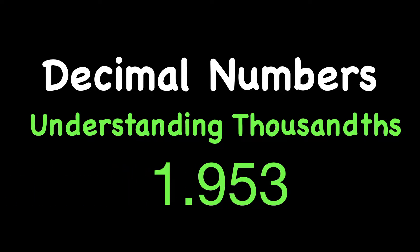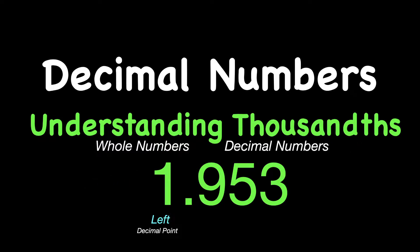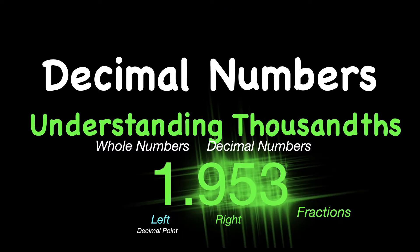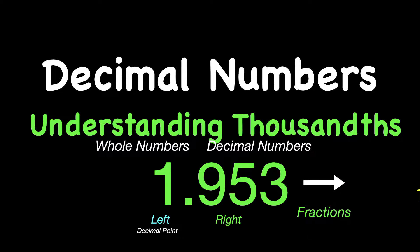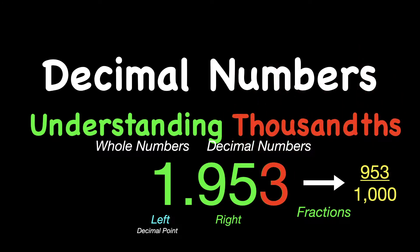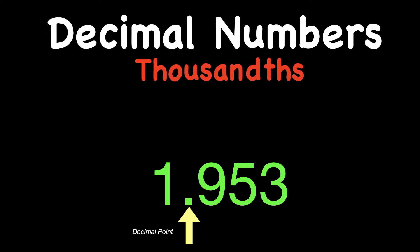For example, the number 1.953 is an example of a number with thousandths. The decimal point in the middle has the job of separating your whole numbers on the left side of the decimal point — the 1 — with your decimal numbers on the right side, in this case the 953, which is actually the fraction 953 thousandths. The 3 represents the thousandths place value, and that's the focus of today's lesson.